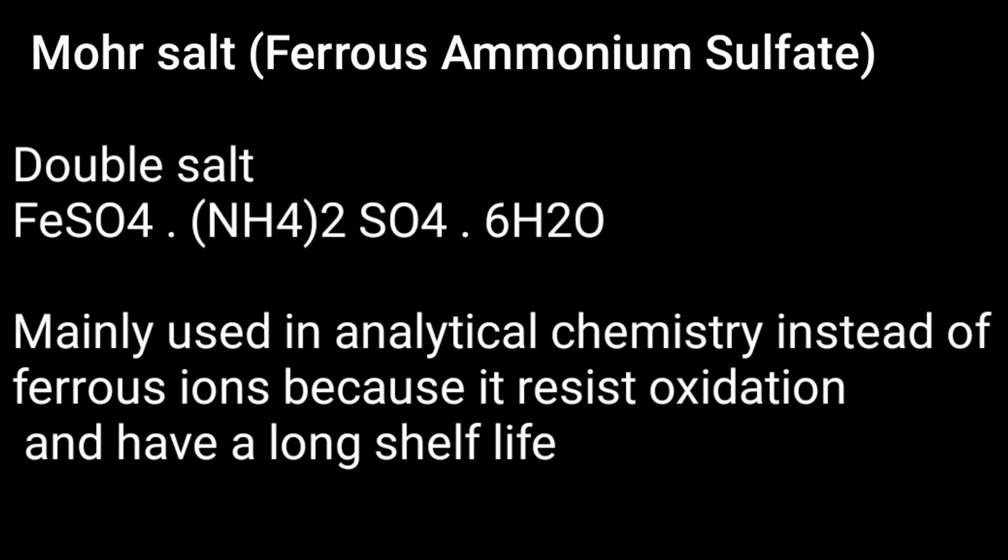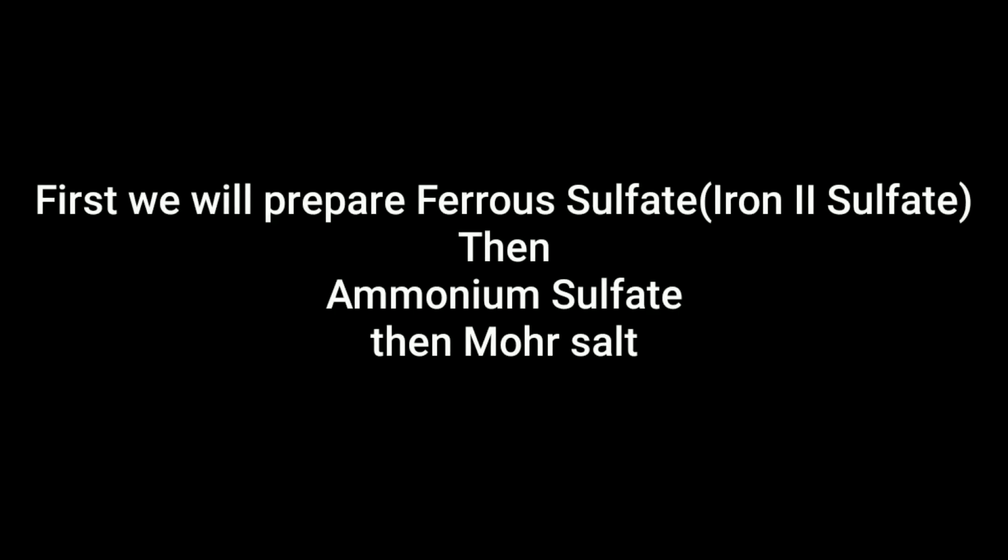Double salts contain more than one type of cation or anion, obtained by combination of different salts that crystallize as a single substance but ionize as two when dissolved. Mohr salt is used in analytical chemistry instead of iron 2 plus.